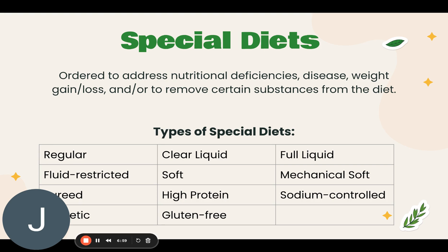The fluid restricted diet is ordered for residents with heart or kidney disease and identifies a specific amount of fluids a person can have in a 24-hour period. A soft diet restricts foods that are hard to chew or swallow, including raw fruits and vegetables and high fiber and spicy foods. A mechanical soft diet consists of semi-solid foods that are chopped or blended to make them easier to chew; however, unlike a soft diet, it does not restrict high fiber or spicy foods.